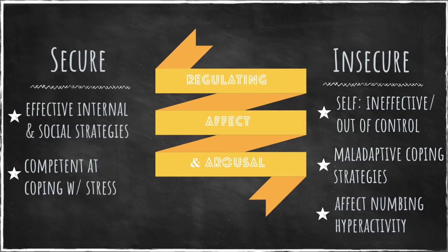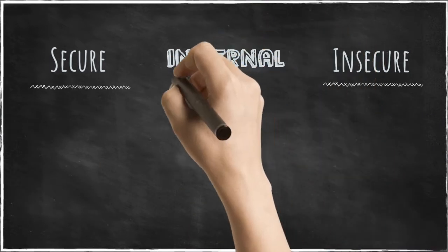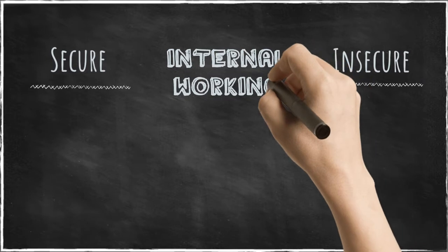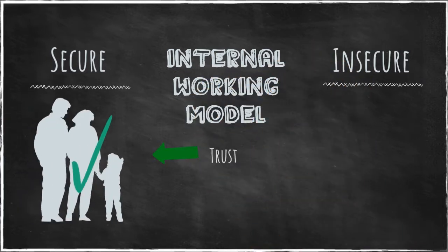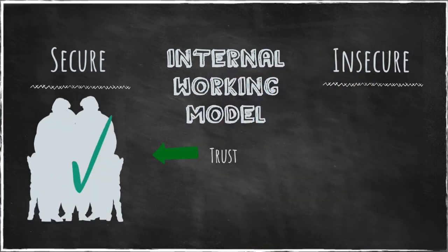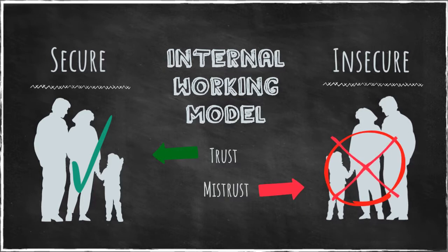This leads to aggression and tantrums. Children with a secure attachment trust caregivers and apply this internal working model to other relationships. Children with an insecure attachment often mistrust the intentions and emotional responsiveness of adults.